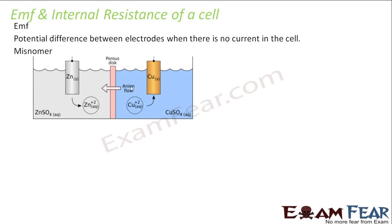Every cell, whether you connect it to a circuit or not, will have an EMF. That is because of the potential difference between its electrodes — it is always present inside the cell.